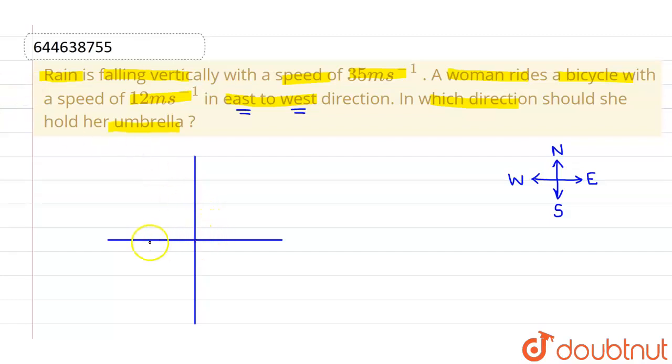Now we are supposing that woman is traveling in this particular direction with the speed of 12 meter per second. And we are also given that the rain is falling vertically downwards with speed of 35 meter per second. This is rain when everything is stationary, observed by a stationary observer. Since woman is moving with a speed of 12 meter per second, the relative rain will appear to the woman at this particular direction. This will be the resultant of these two, with which the woman feels the rain.